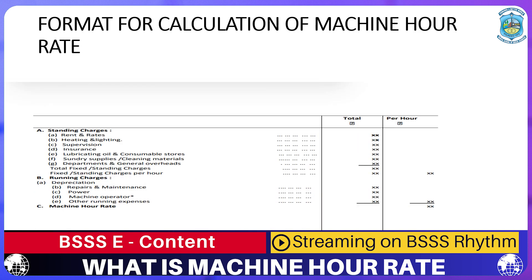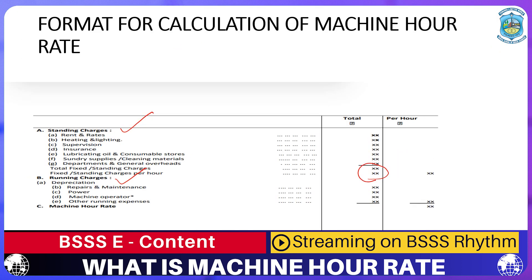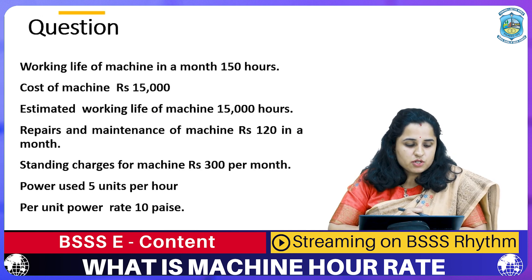For a lengthy question, there is a standard format to follow. The total expenditure is divided into two parts: standing charges and running charges. You add up all standing charges, divide by total hours to get the per-hour standing cost. Similarly, add all running charges and divide by total hours to get running charges per hour. Adding both gives you the Machine Hour Rate.